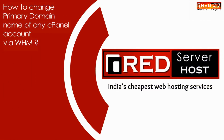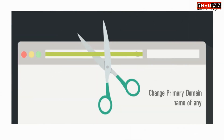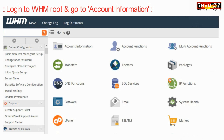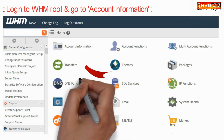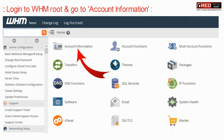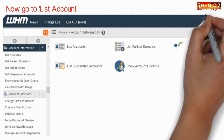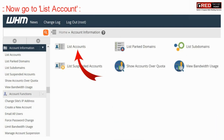In this video we will learn how to change the primary domain name of any cPanel account via WHM. To do that, log in to WHM as root, then go to Account Information and open List Accounts.